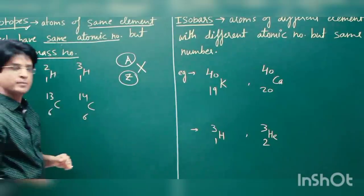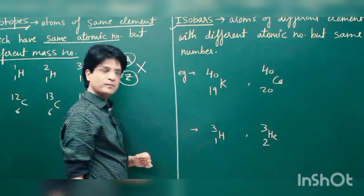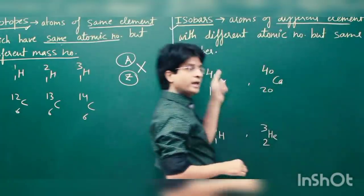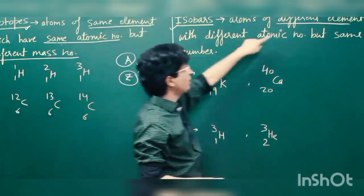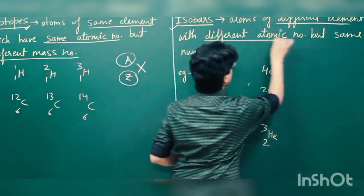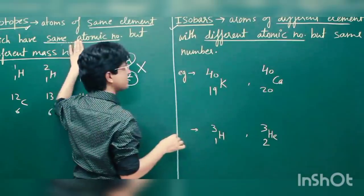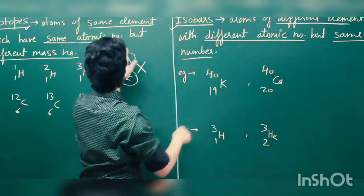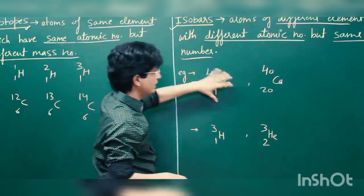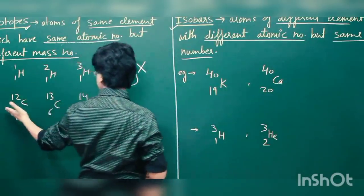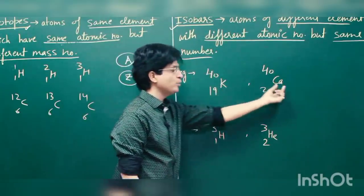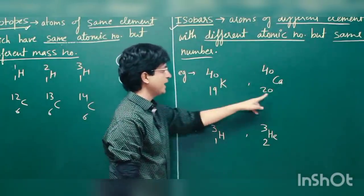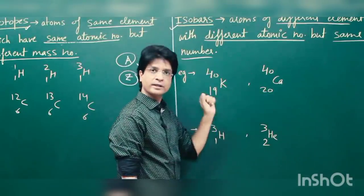Now let us come to isobars — just the opposite of isotopes. Here we have atoms of different elements with different atomic numbers, but the same mass number. For isotopes, the atomic number was the same and mass number different; for isobars, the atomic number is different but mass number is the same. For example, an isotope of hydrogen and an isotope of helium can have the same mass number but different numbers of protons — different atomic number.